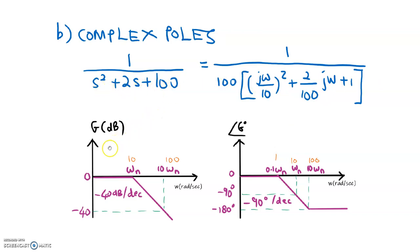For complex poles — for magnitude — the starting point is 0 dB. This is the cutoff frequency. For frequency less than 10, the slope is 0 dB per decade. For frequency greater than 10 until the end, the slope is negative 40 dB per decade. The slope is negative because it is poles, and 40 because it has double poles. So the slope is negative 40 dB per decade for all frequencies greater than the cutoff frequency.